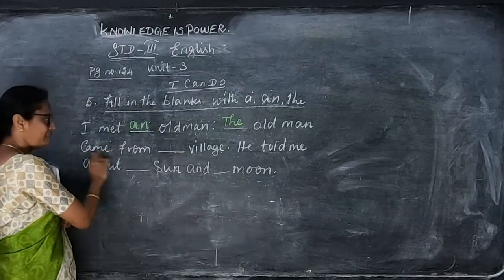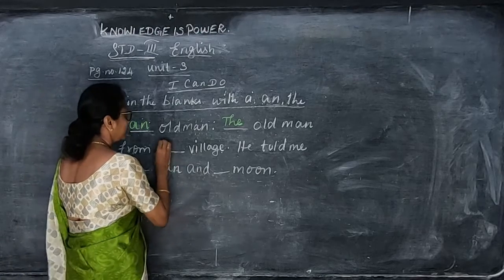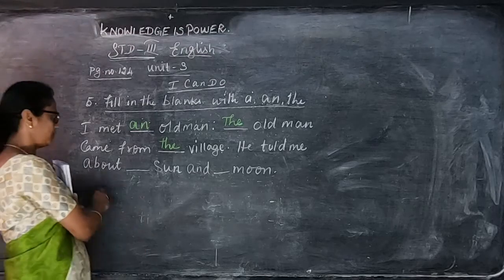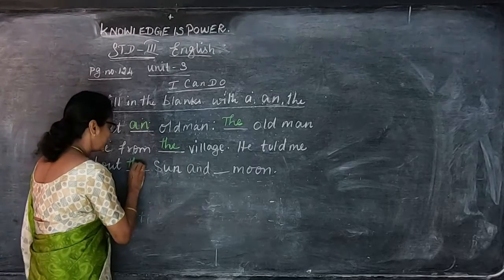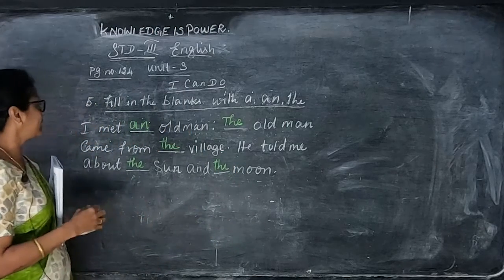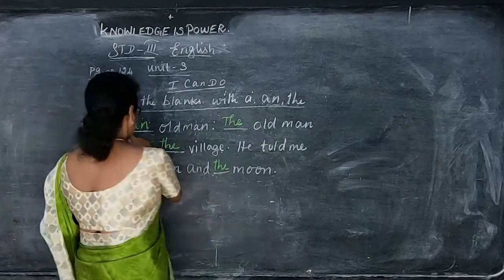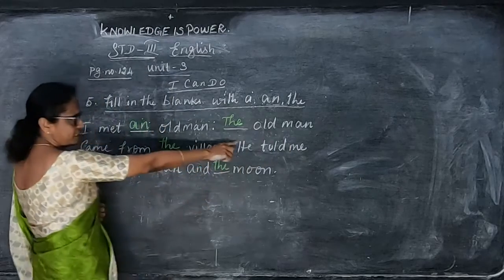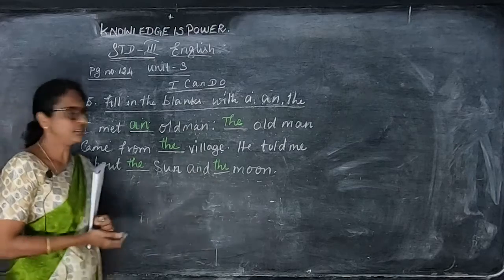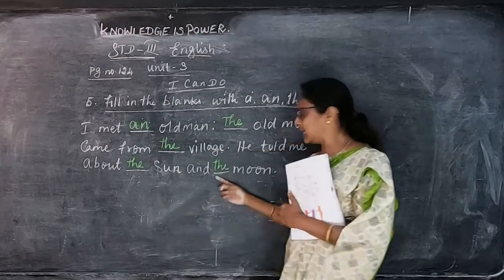'The old man came from the village. He told me about the sun' — sun is a unique thing, so use 'the'. 'The sun and the moon.' So the full paragraph reads: 'I met an old man. The old man came from the village. He told me about the sun and the moon.'